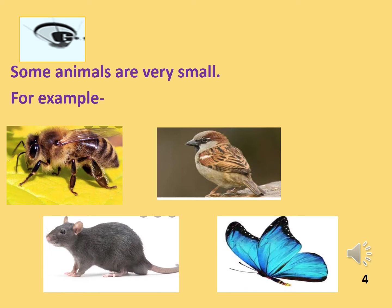Some animals are very small. For example, a fly, sparrow, rat and butterfly. As you can see, I have given the example of a sparrow, butterfly and fly also under small animals because all the insects and birds also come under the category of animals. So all these are also animals.